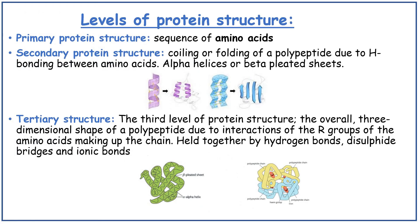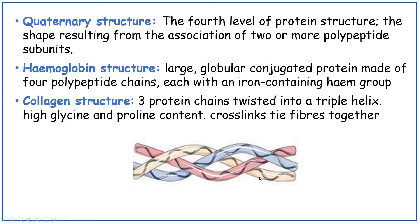Levels of protein structure. Primary protein structure is a sequence of amino acids. Secondary protein structure is the coiling or folding of a polypeptide due to hydrogen bonding between amino acids — alpha helices or beta pleated sheets. Tertiary structure is the overall three-dimensional shape of a polypeptide due to interactions of the R groups, held together by hydrogen bonds, disulfide bridges and ionic bonds. Quaternary structure is the fourth level — the shape resulting from the association of two or more polypeptide subunits.